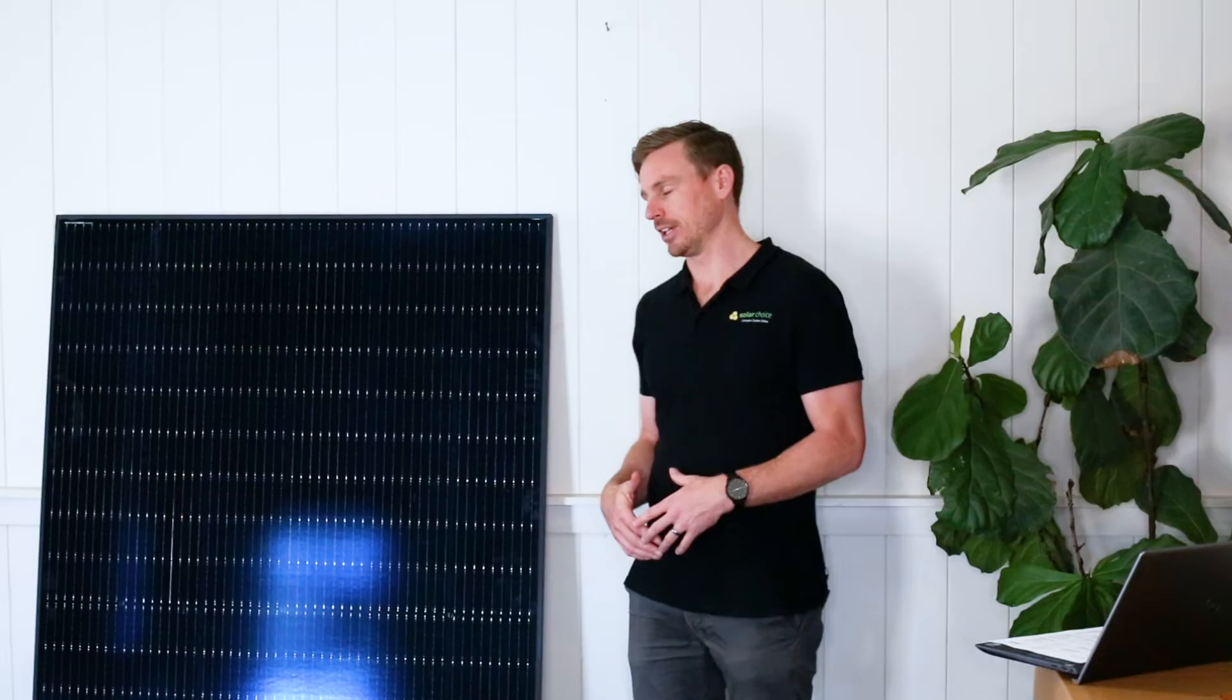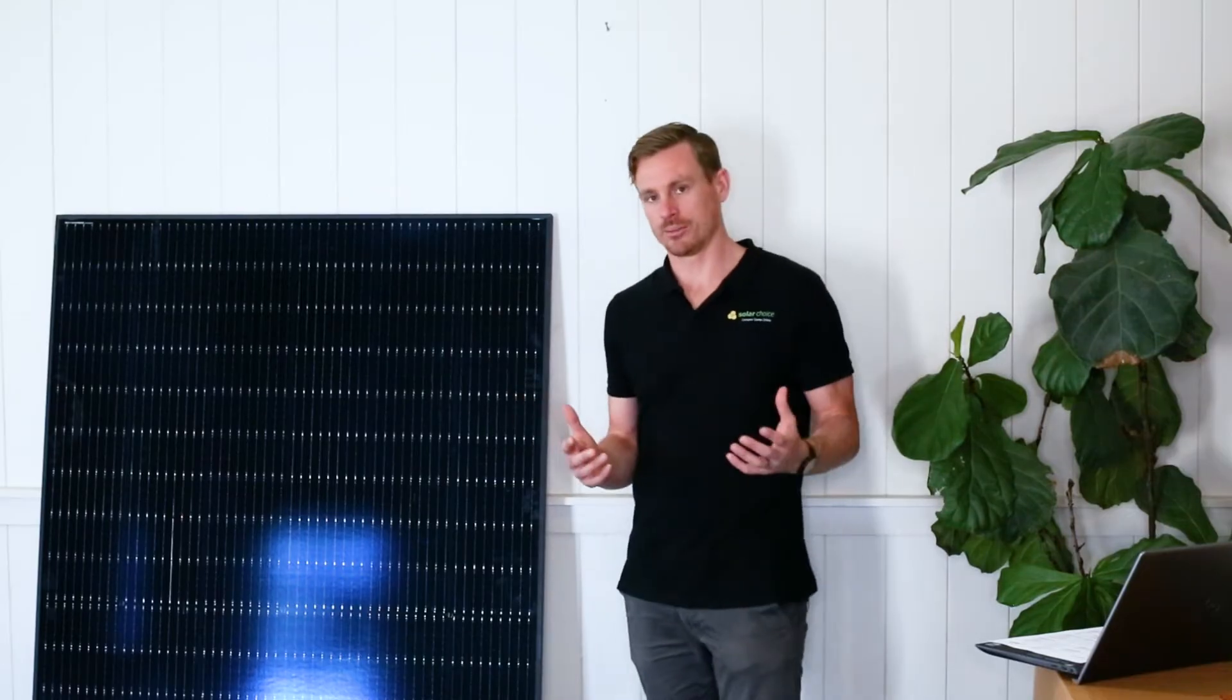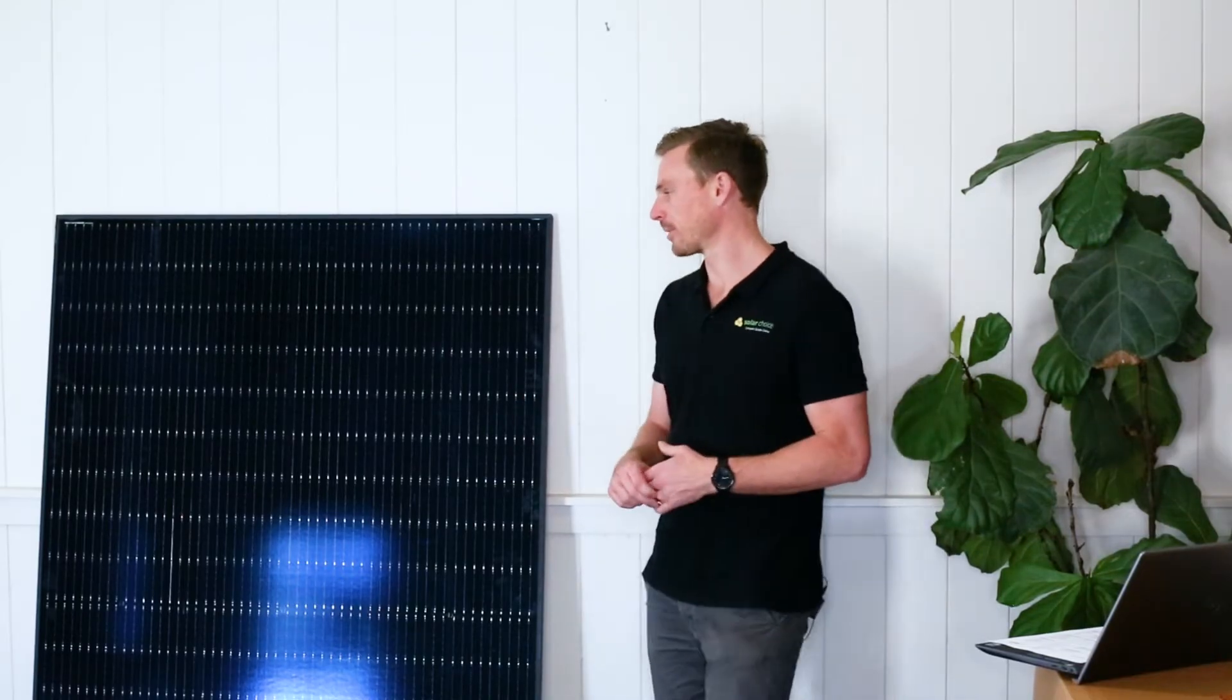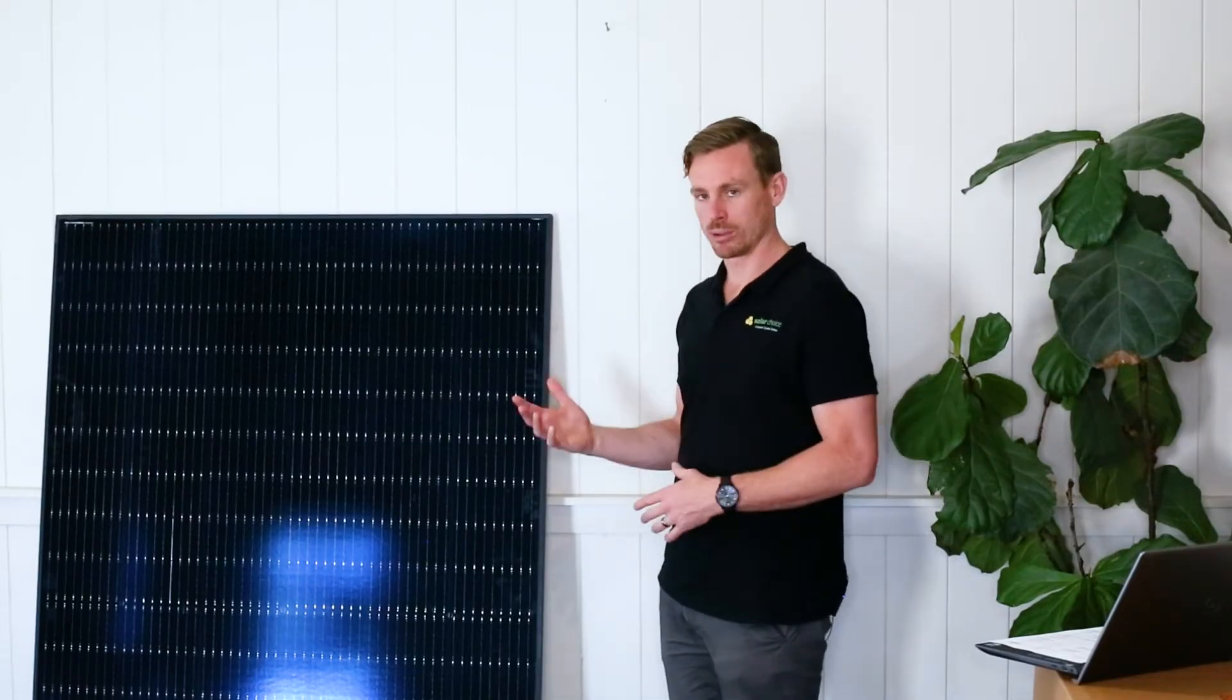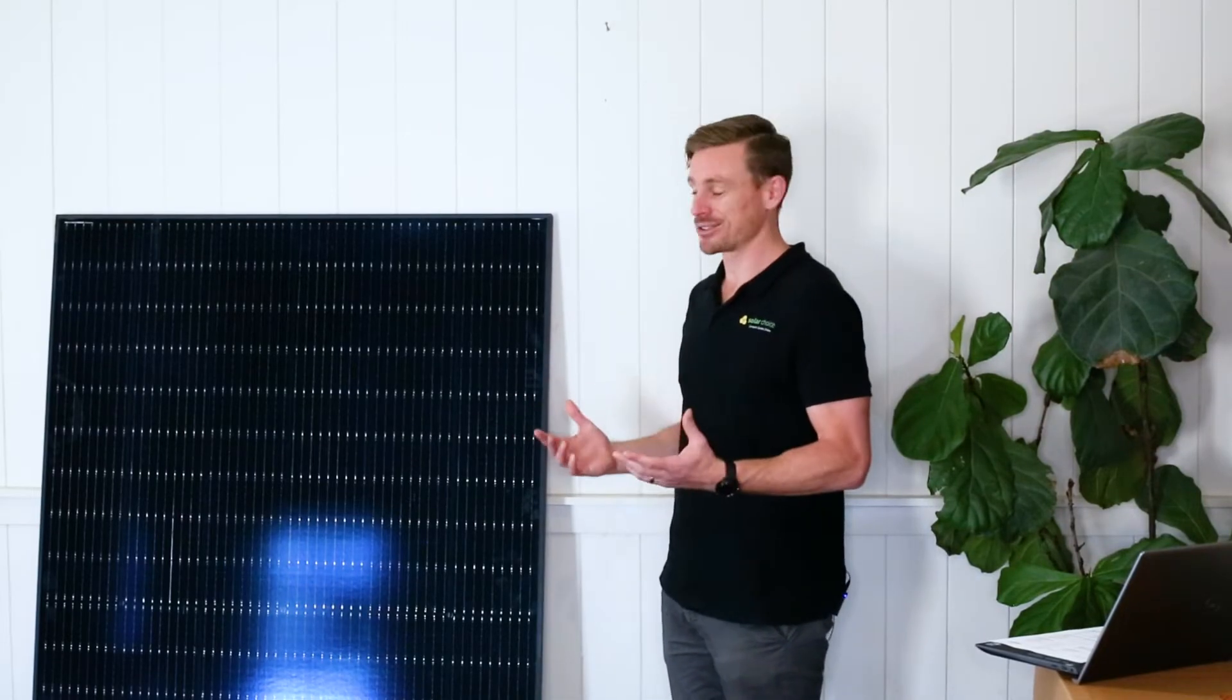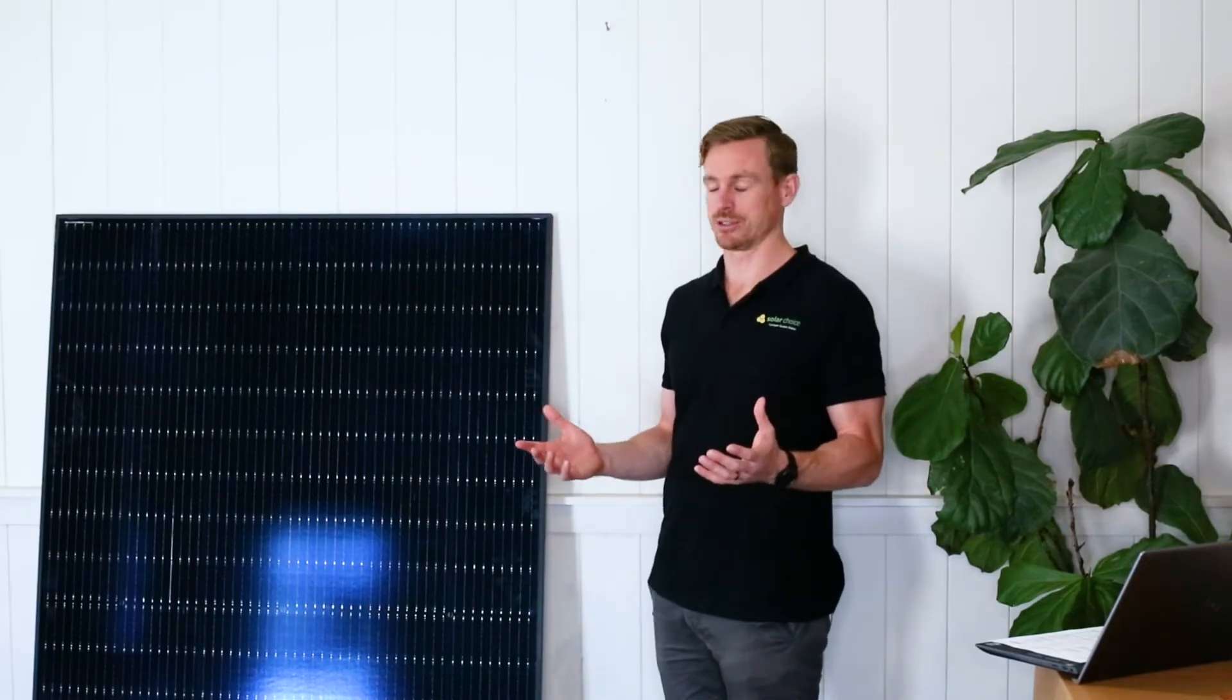So let's talk about some of the features of this Longhi HiMo 5 M solar panel. Firstly, you'll see the dimensions are about 1.1 meter by 1.7 meters, making it suitable for residential installations.